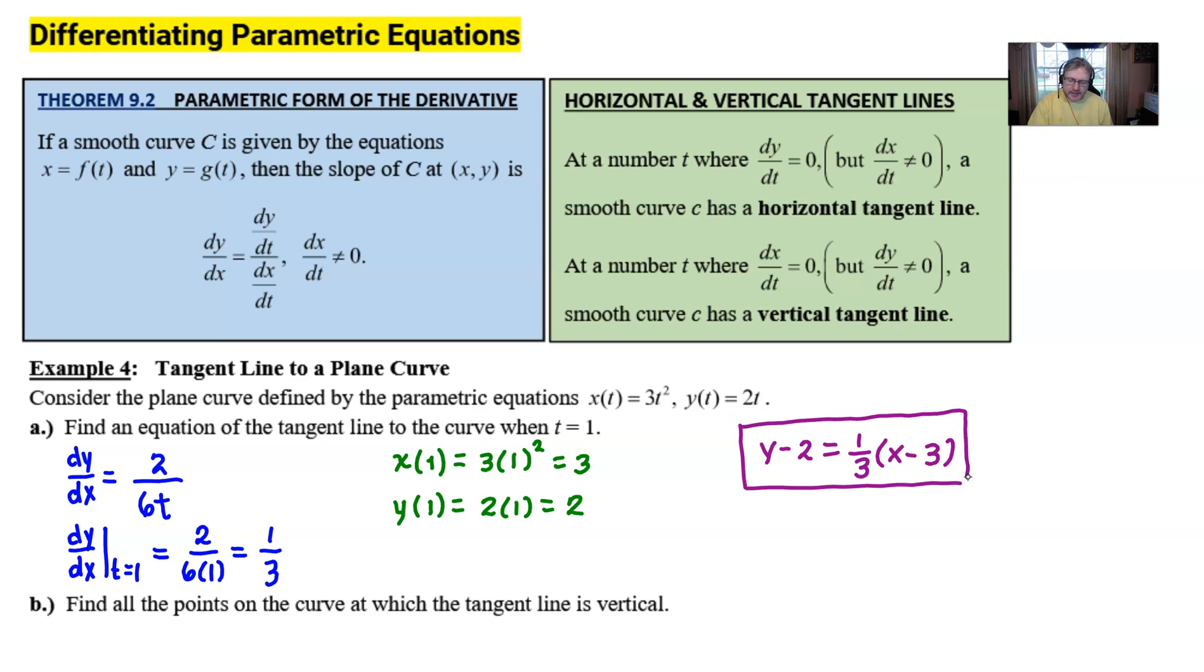Now for part b, it asks to find all the points on the curve at which the tangent line is vertical. Well, if we look at the green box, it gives us a heads-up on how to figure out when we have vertical and horizontal tangent lines. And it's not going to be that much different from the way that you learned it from an earlier part of the course, with say, implicit relations and their derivatives.